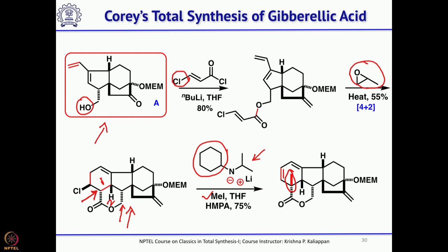That was the idea. The methyl group was introduced, and as you can see there was also an elimination of HCl because of the presence of a base like lithium isopropyl cyclohexyl amide. That generated a diene, and you could also introduce the methyl group at the required position.